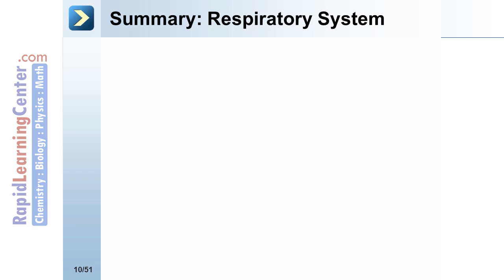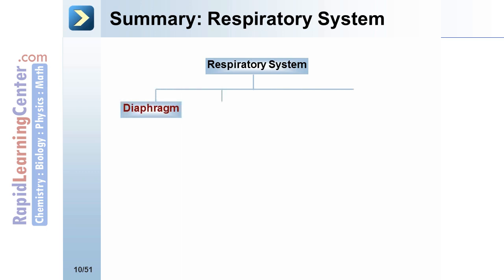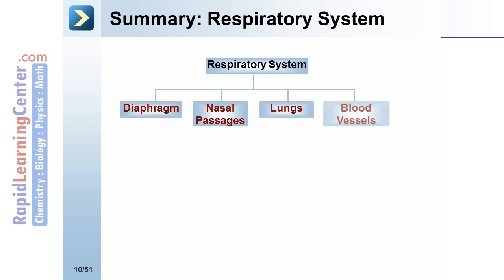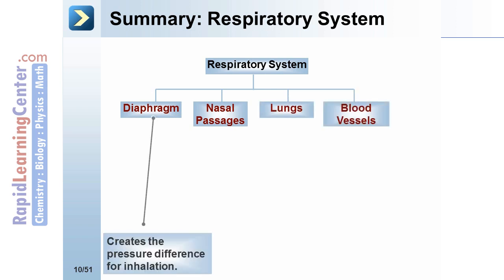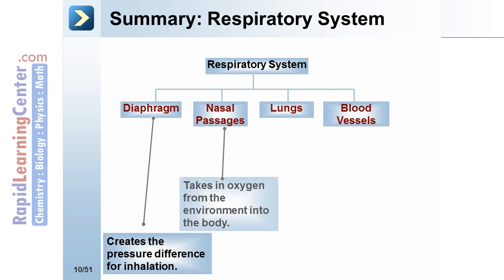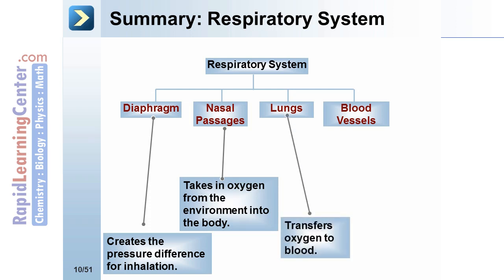The respiratory system includes the diaphragm, nasal passages, lungs, and blood vessels. The diaphragm creates the pressure difference for inhalation. Nasal passages take in oxygen from the environment into the body. The lungs transfer oxygen to blood, and blood vessels carry oxygen to the body.